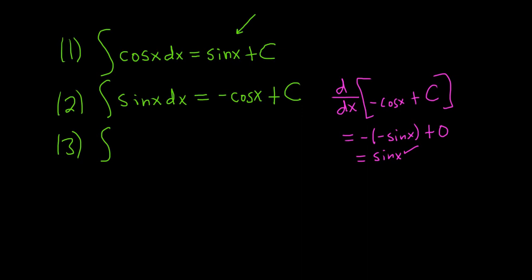The next formula is not so bad. It's the formula for the integral of secant squared x dx. You ask yourself: what is a function whose derivative is secant squared? Well, the derivative of tangent is secant squared. So when you integrate secant squared, you get tangent x, and let's not forget our arbitrary constant of integration, capital C.